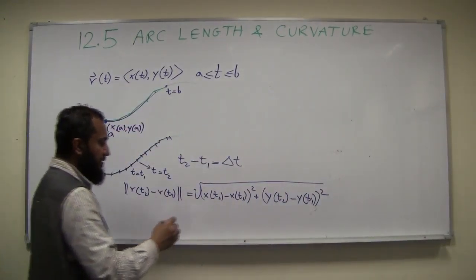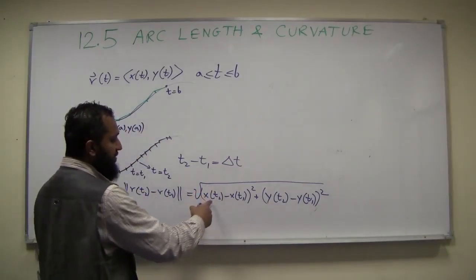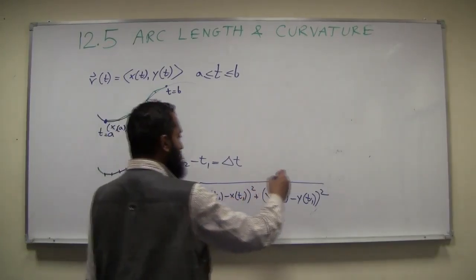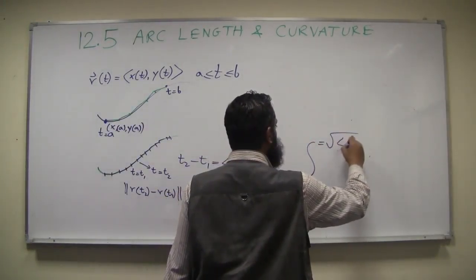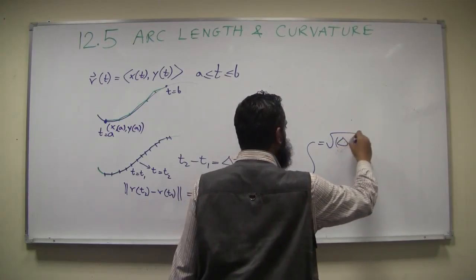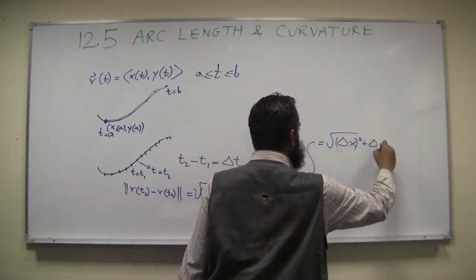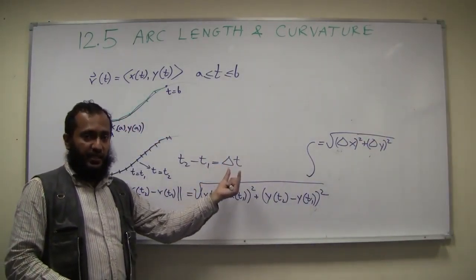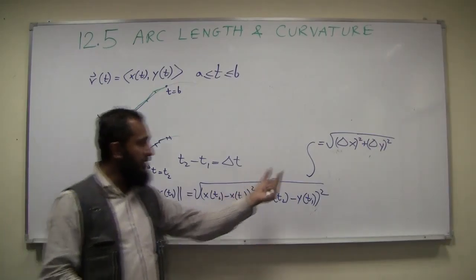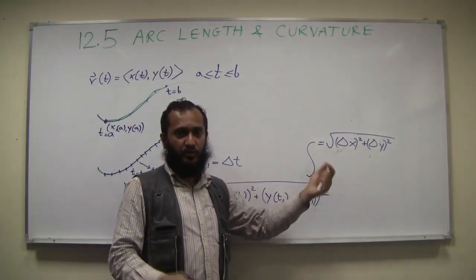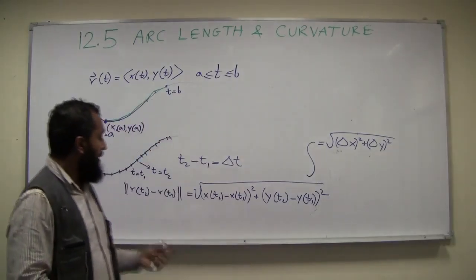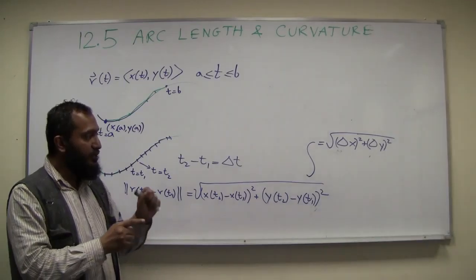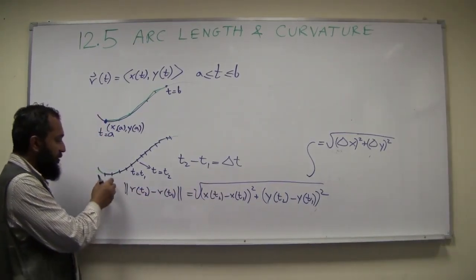You can think of x(t2) - x(t1) as the change in x. So this equals the square root of delta x squared plus delta y squared. For a small time change delta t, you look at the small change in x and small change in y, square them, add them using the Pythagorean theorem — that gives you an approximation.